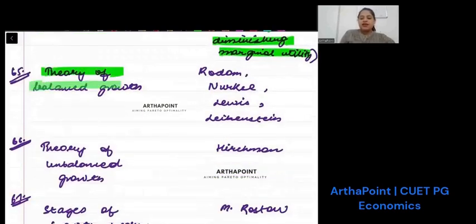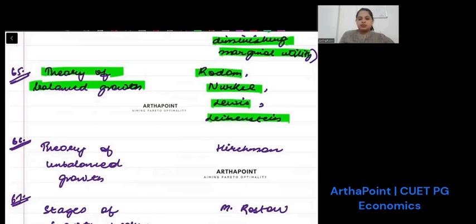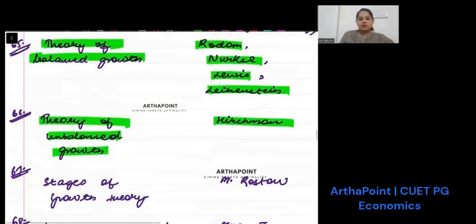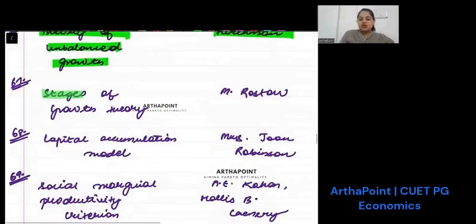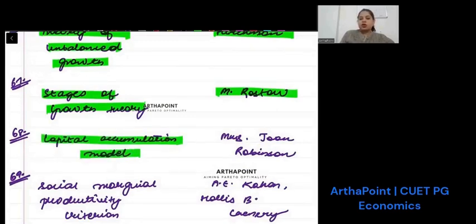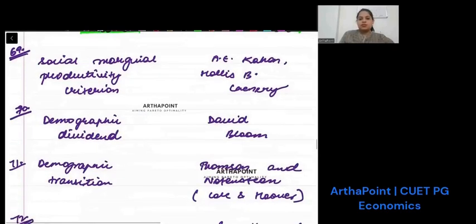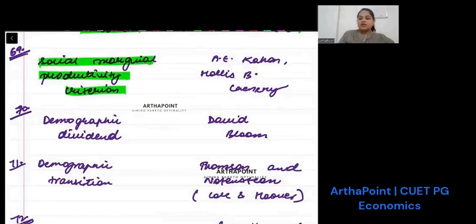Theory of balanced growth is under Rodan, Nurkse, Lewis and Leibenstein. Theory of unbalanced growth is under Hirschman. Stages of growth theory is under W. Rostow. Capital accumulation model is given by Mrs. Joan Robinson. Social marginal productivity criteria is given by A.E. Kahn and Hollis B. Chenery. Demographic dividend is given by David Bloom.